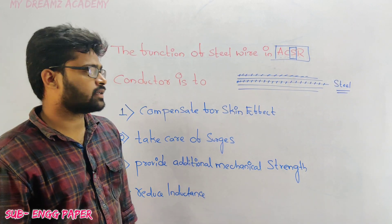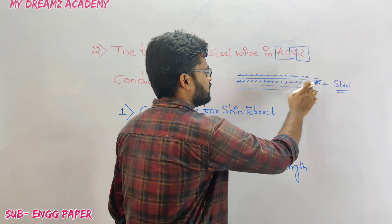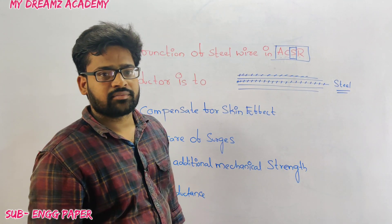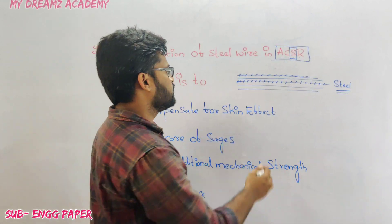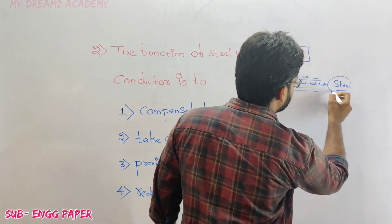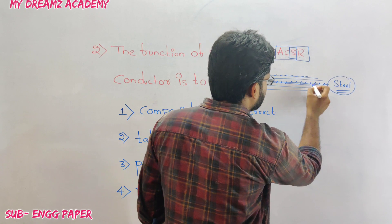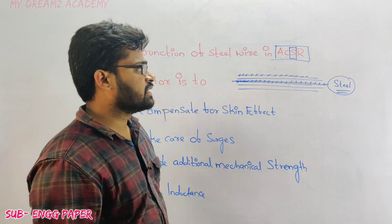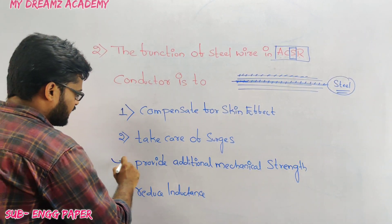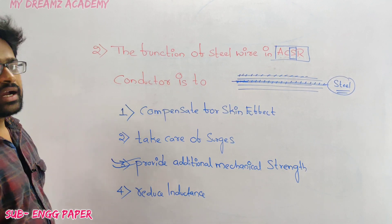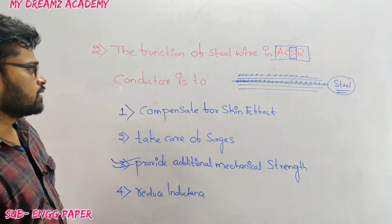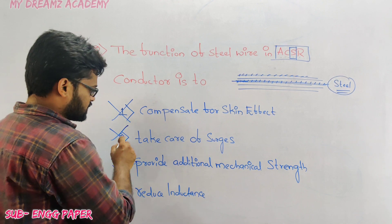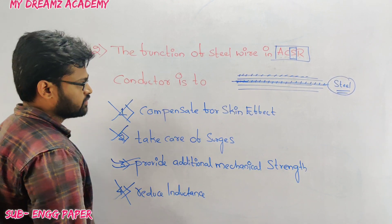Due to skin effect, the current density is high at the surface of the conductor and very less at the inner layer. So if you use aluminum at the center it will be a waste of cost, so we use steel instead. Another advantage is that the steel provides additional mechanical strength to the conductor.